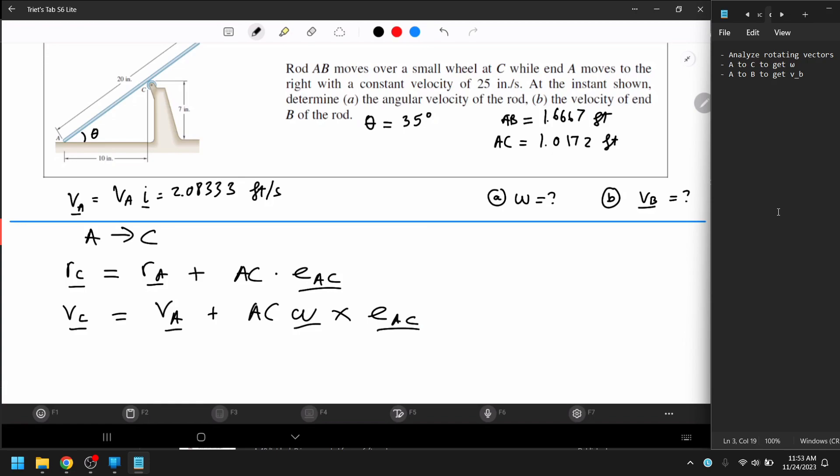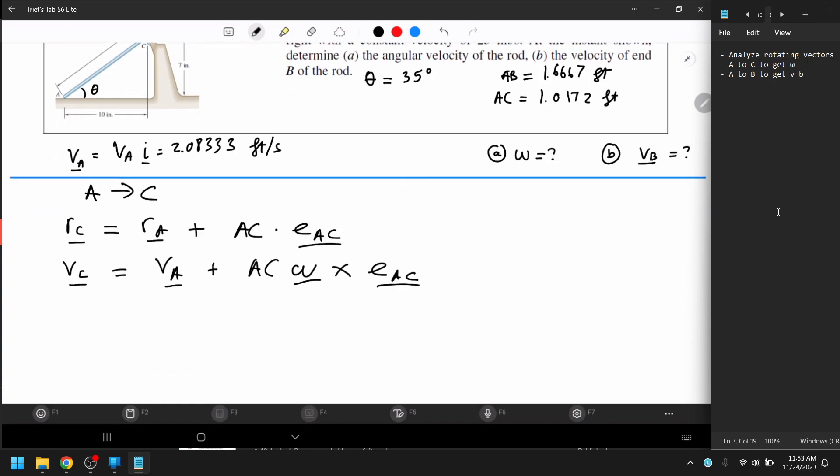So here, another step we need to do, we know this, we know V_A, we know this, we know AC, we're finding this omega, we don't know anything about V_C. This is where the trick come in.